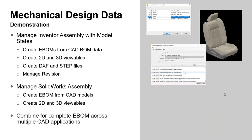Let's take a look at this now. We're going to start with an Inventor assembly example. We'll show how you can create an engineering BOM from the CAD BOM data - actually multiple BOMs in this case - create viewables in 2D and 3D versions, create STEP files of solid models, and manage revisions. We'll then look at SolidWorks and how that same workflow works within Vault, and see how you could combine data from both sources into a single unified bill of materials.